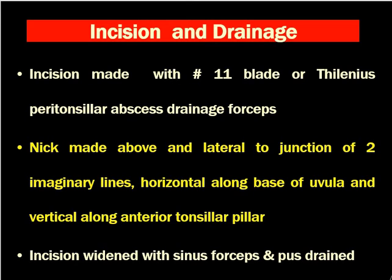The nick is made above and lateral to the junction of two imaginary lines — one horizontal along the base of the uvula and one vertical along the anterior tonsillar pillar. If we have already aspirated, we know the area, so we can make a nick there and simply widen it with sinus forceps to drain the pus. If using peritonsillar abscess forceps or Quincy forceps, the forceps themselves act as the incision and drainage mechanism — insert the forceps and widen them.